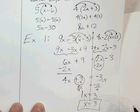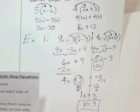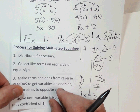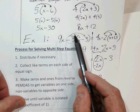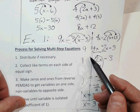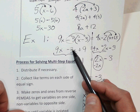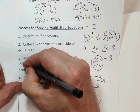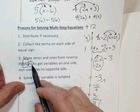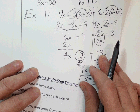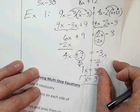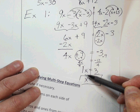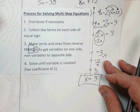Let's review the process. First, distribute to get rid of parentheses — if there are no parentheses, skip this step. Second, collect like terms on each side. Third, make zero pairs using addition and subtraction to move terms to one side, then make a coefficient of one using multiplication or division. We make zeros first, then ones, to get the final answer.